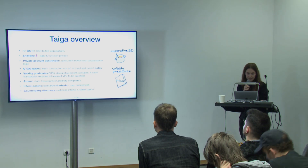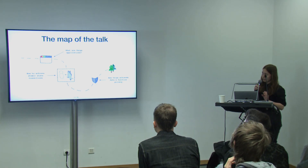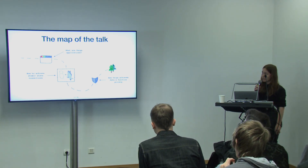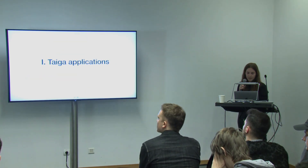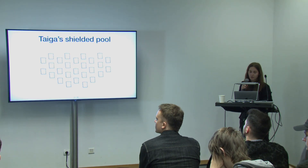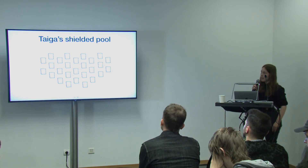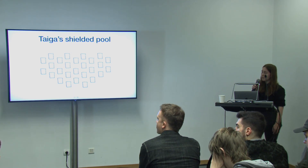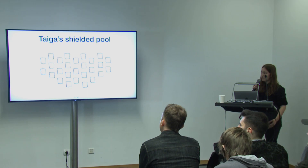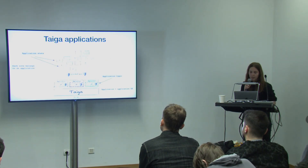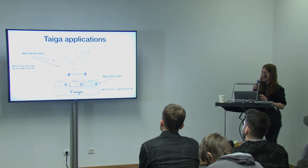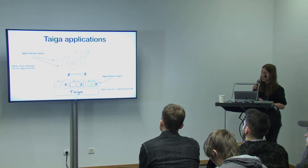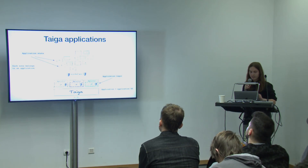The talk will have three main sections: what are Tyga applications, how to achieve atomic state transitions, and how Tyga achieves data and function privacy. For applications: there is a shielded pool of notes, like UTXOs, floating around. Applications are the things that tell users what is allowed to do with these notes and what is not. An application contains two main parts: application state and application logic. Application state is built from all the notes the application owns, and application logic is expressed as a validity predicate.